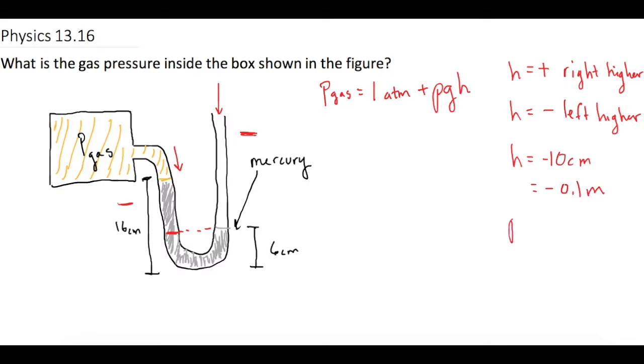The rho of mercury is 13,600 kg per cubic meter. And we know 9.8 for gravity and 1 atm for pressure.